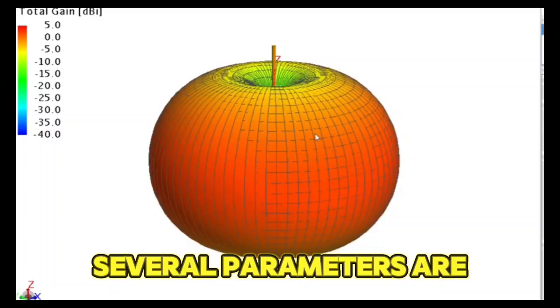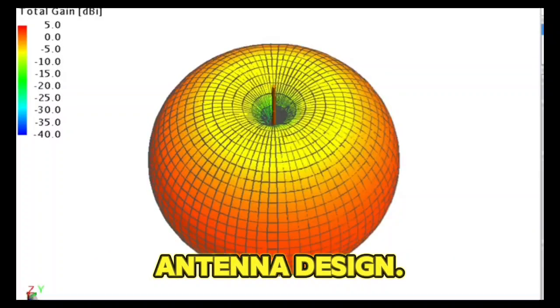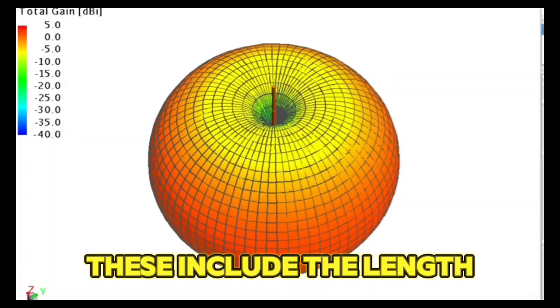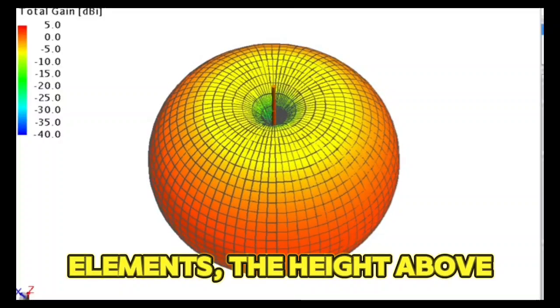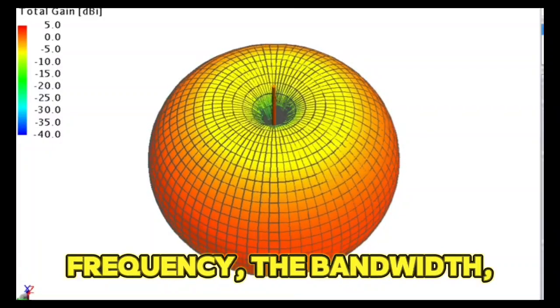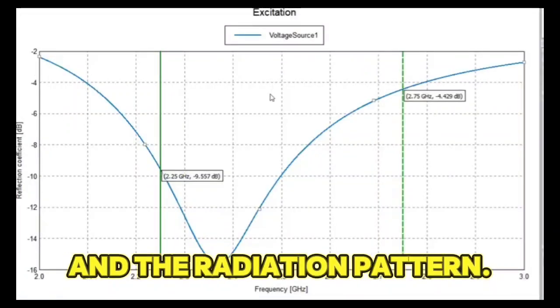Several parameters are important in dipole antenna design. These include the length and diameter of the elements, the height above ground, the operating frequency, the bandwidth, and the radiation pattern.